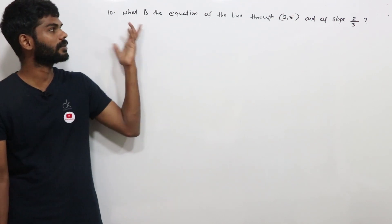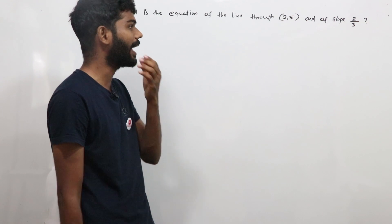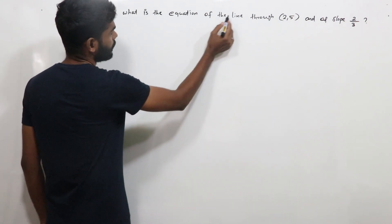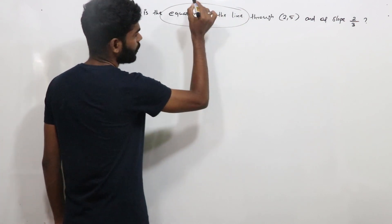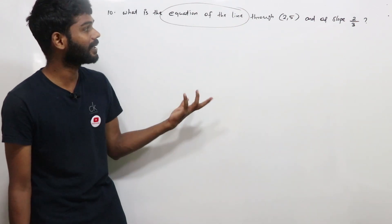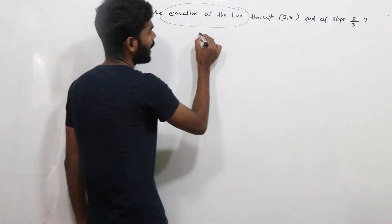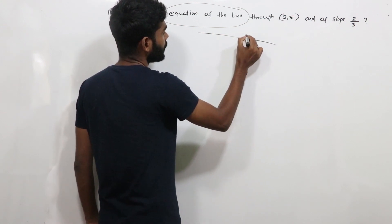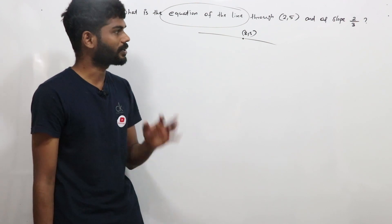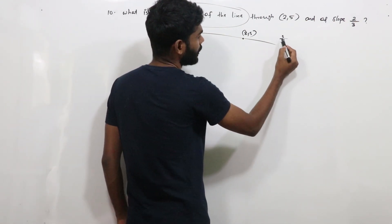Next problem: What is the equation of the line through (2, 5) and of slope 2/3? We need to find the line equation. We have one point (2, 5) and a slope of 2/3.